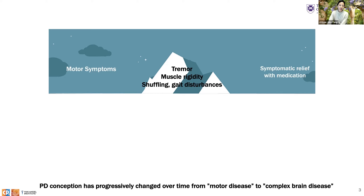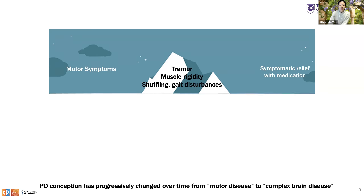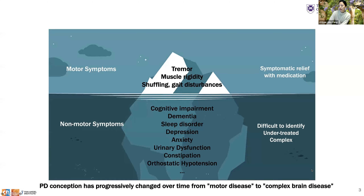With Parkinson's disease, you typically imagine motor symptoms such as stooped posture, muscle rigidity, tremor, and shuffling gait. These are well recognized by clinicians and symptom management is well established with medication. However, there are a wide range of non-motor symptoms such as cognitive impairment, dementia, sleep disorder, depression, and anxiety that are often difficult to identify, under-treated, and complex. Therefore, the concept of Parkinson's disease has progressively changed from a motor disease to a complex brain disease.